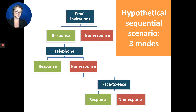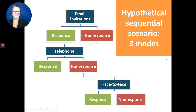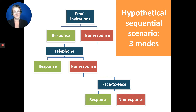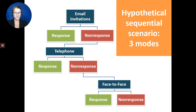Some folks will do this as an iterative process rather than deciding everything upfront. They might start with email invitations to the survey, and if people respond, great. But if there's non-response, they then do telephone — contacting those people by phone to collect their data. They pick up some more people there, and if there's still non-response, they go to a third mode, maybe door-to-door, face-to-face, or paper. In that case, it would be a sequential effort using three different modes.